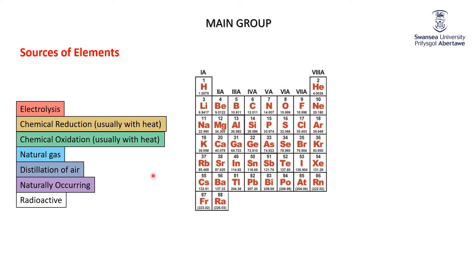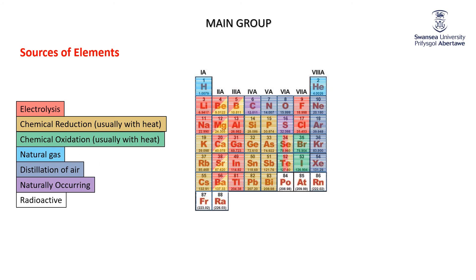Regardless of the oxidation state, we can electrolyze the element — or the atom if you like — to get down to it in the elemental stage. If it has a positive oxidation number we can reduce it; if it has a negative oxidation number we can oxidize it.